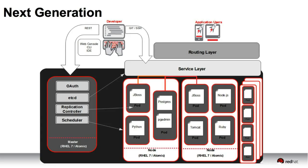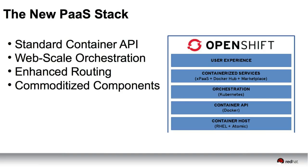We have one routing layer — you don't see an HAProxy standing up in front of every application anymore. You'll have one for the platform. It'll be customizable, it'll be HA'd, and you'll be able to integrate it with your own data center fabric. We've had a lot of requests to move to a central routing layer. The developer experience changes — we want to keep the developer experience we have today. The developer shouldn't have to know anything about Docker, just like he didn't have to know anything about gears.